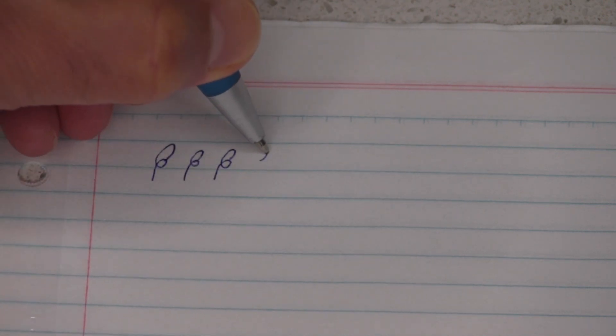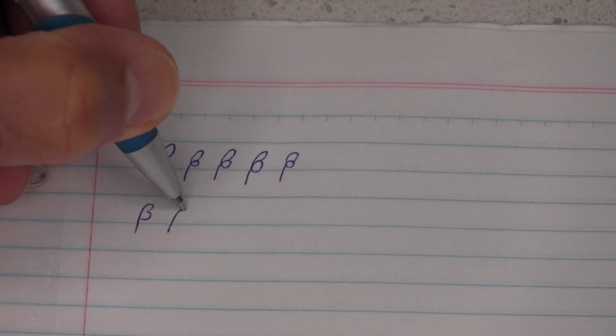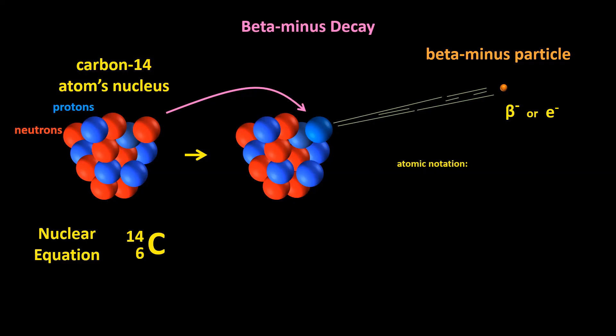When I hand write the beta symbol, I use a curvy style like my Greek school teachers taught me way back in the day. However, you can also write it starting from below the line and then moving up and around. In atomic notation, beta minus particles are written as 0-minus-1-beta or 0-minus-1-E. The minus 1 refers to the fact that they have a negative charge.